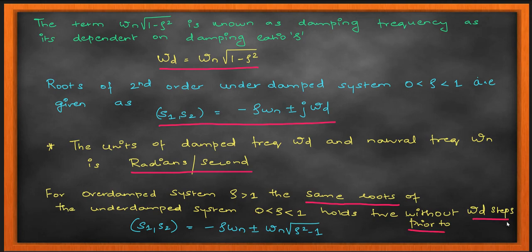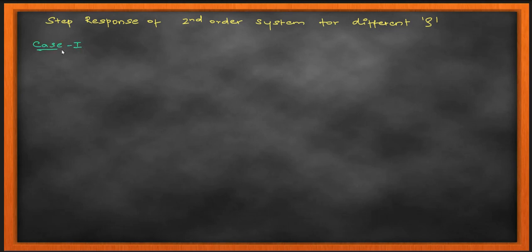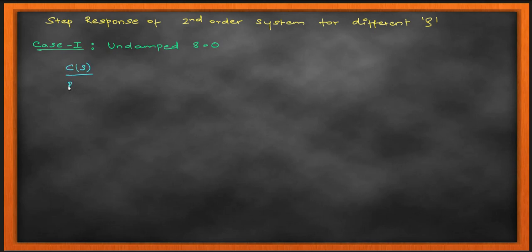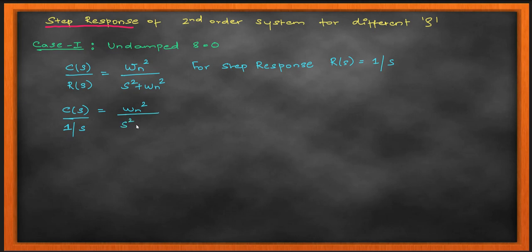That covers the root characteristics for different damping ratio values. These root characteristics are also analogous to the impulse response, since R(s) = 1 for an impulse, and I leave that analysis to you. What I am going to show here is the step response. For the step response, R(s) = 1/s. I'm going to do all four cases and find the step response for my second order system when the input is a step signal.